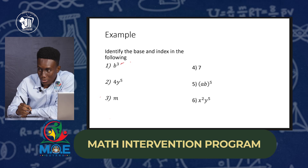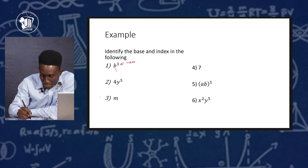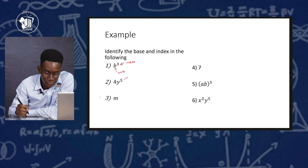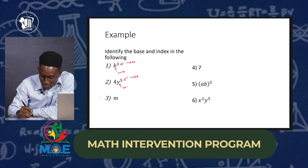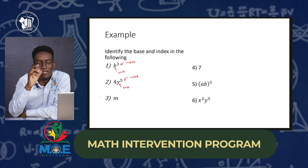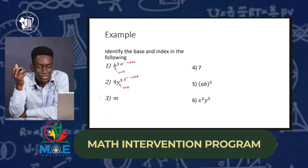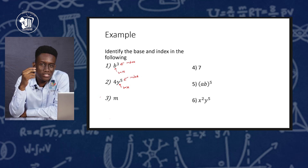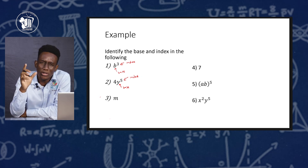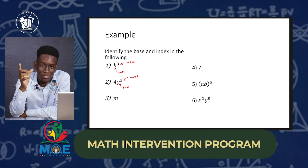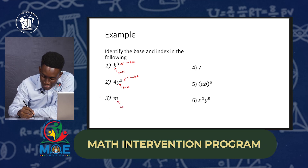Let's look at some brief examples and identify the base and index. The first one is b raised to the third power. The 3 will be the index and the b will be the base. The second one: 4y raised to the fifth power — the 5 will be the index and the y will be the base. Now we have m. As you can see, m is not being raised to any power. When you don't see a term or number being raised to a power, a power is there but it's invisible and that power is 1. So m would be the base and 1 would be the power.